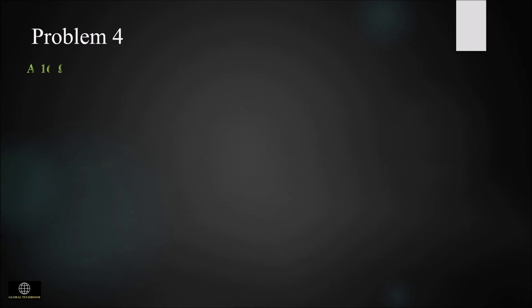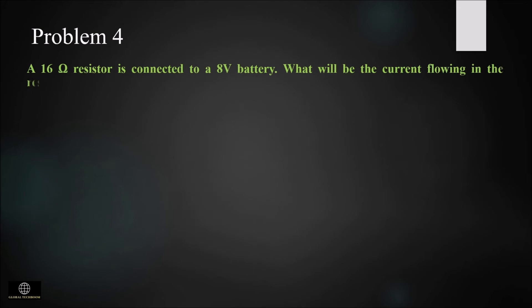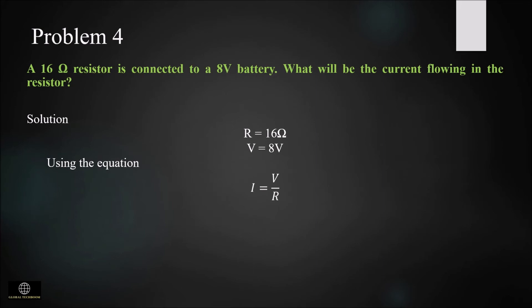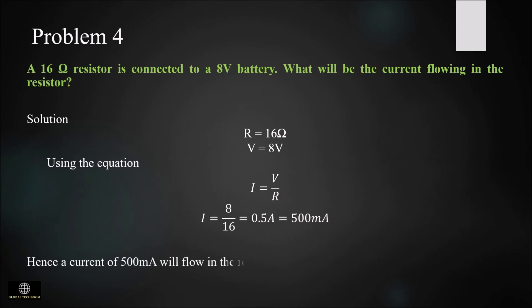In the next problem, a 16 ohm resistor is connected to an 8 volt battery. What will be the current flowing in the resistor? Here resistance is 16 ohm and voltage is 8 volt. Using Ohm's law, I = V/R, and substituting the values we get the current as 0.5 ampere or 500 milliamp.